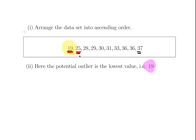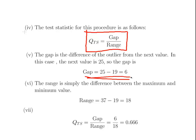The potential outlier is 19. The next lowest value is 25, and the gap there is 6 — a difference of 6. The range is the difference between the lowest value and the highest value, which is 37 minus 19, that is 18. So the gap is 6: the absolute distance from the outlier to the next point.